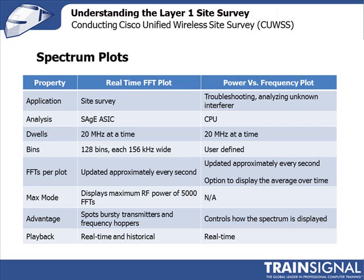The power versus frequency plot does its analysis within the computer, leveraging the CPU in your laptop. Like the FFT plot, it still looks at a 20 megahertz channel and then moves to the next. The advantage is that the bin size is not hard-coded in the ASIC — you can define it yourself.